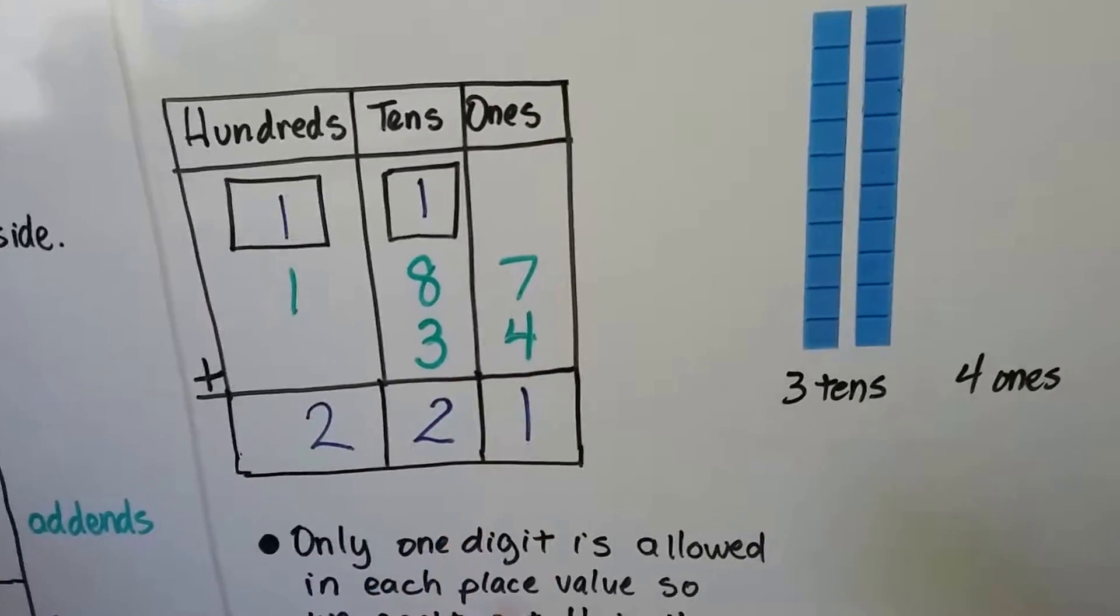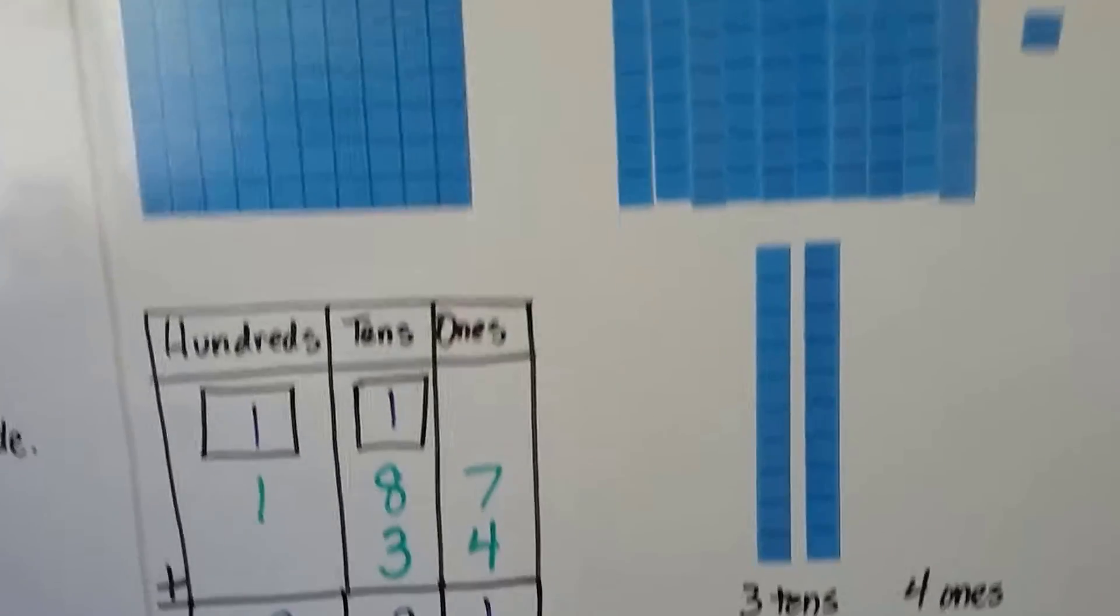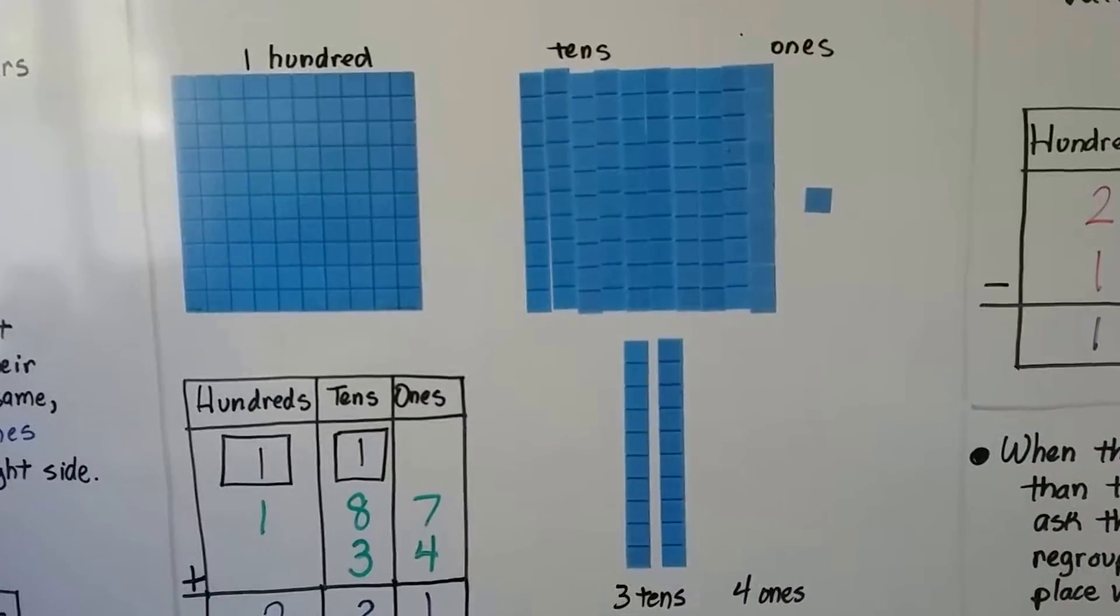So now we have 100, 200, 2 tens and a 1. 2 hundreds, 2 tens and a 1. So by regrouping, we were just rearranging the grouping.